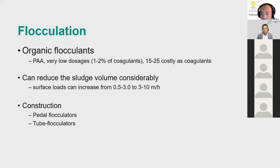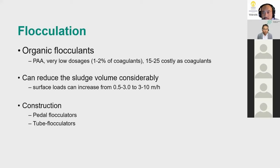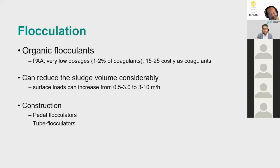Flocculation is the second stage after initial rapid mixing. Organic flocculants — polyacrylamides — are typically used at very low dosages, about one to two percent of coagulant amounts. Although they cost 15 to 25 times more than normal coagulants, because so little is used, the cost difference does not matter in practice.